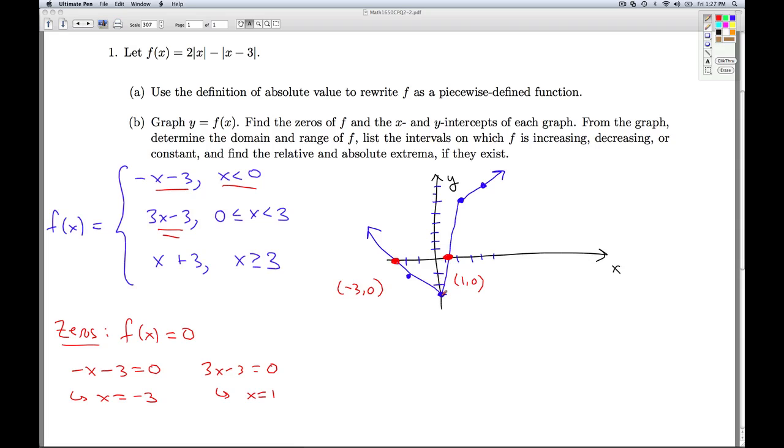For the y-intercept, that was one of the points we originally plotted. We plug in x equals 0, and we plug in x equals 0. To this formula then, we get negative 3. All right, so those are the zeros and the intercepts.